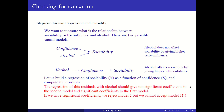There is a way of using regression to determine causation, but you need to put a model on that. You need to compare several models. Let's say you are interested in the relationship between confidence, alcohol, and sociability, and you have two competing models.